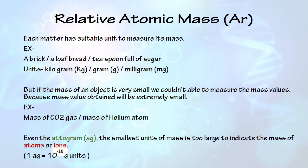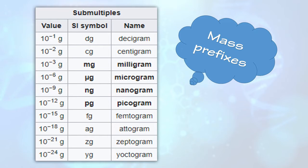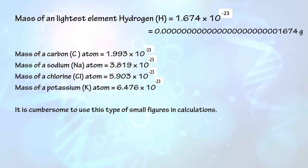Even the attogram, the smallest unit of mass, is too large to indicate the mass of atoms or ions. These real weights — for example, sodium, chlorine, and potassium — are very, very small, and we feel cumbersome to use these types of small figures in calculations.